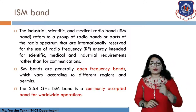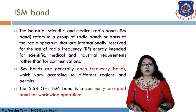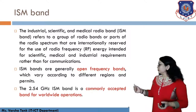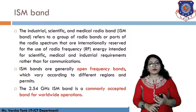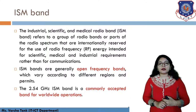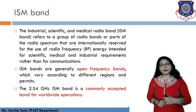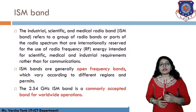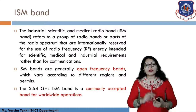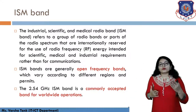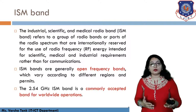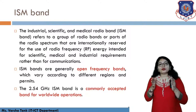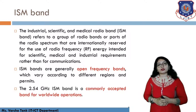ISM bands are generally open frequency bands — just like open source technology, we can use them without any license agreement. The 2.54 GHz ISM band is a commonly accepted band for worldwide operation. You can use this frequency band without any license agreement or registration. For example, you can connect your phone and your friend's phone using Bluetooth and transfer data without any license.